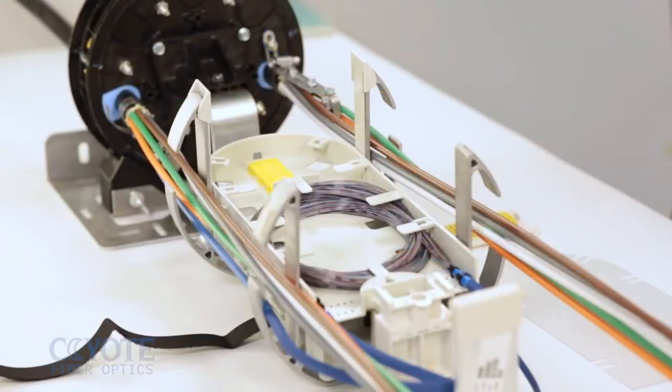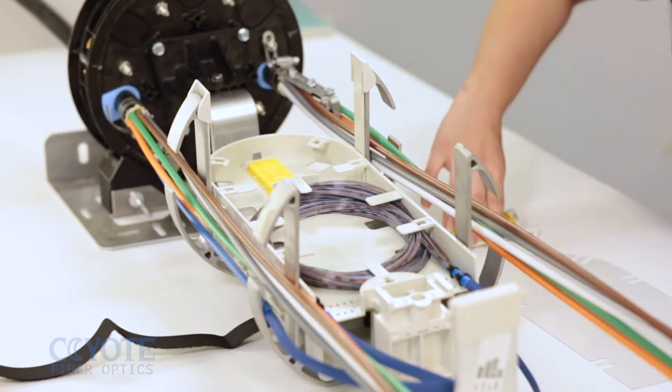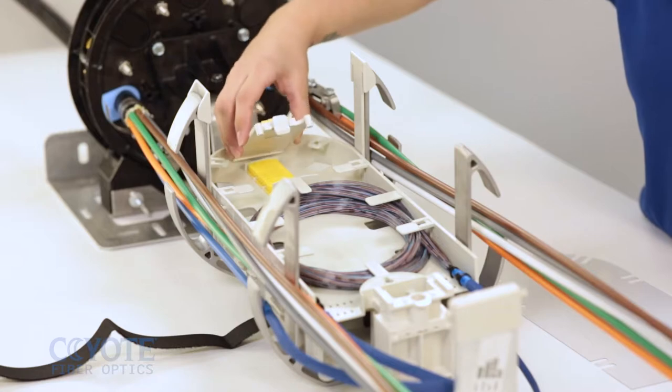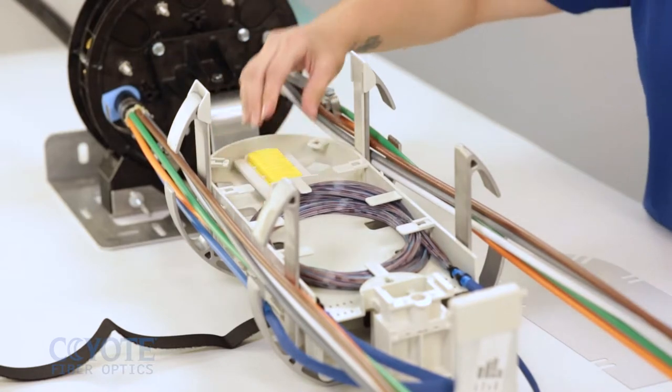When splicing 288 count in the deep profile tray, a splice platform needs to be installed. Install the platform into the tray by inserting the top of the platform into the rounded edge of the splice tray. Press down on the legs of the platform to secure it into the splice tray.